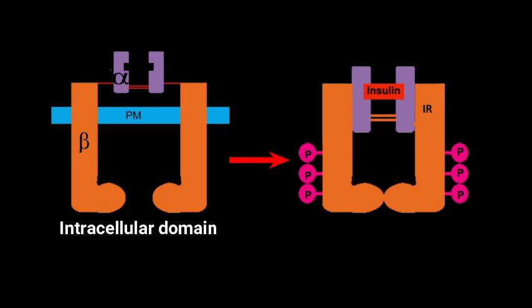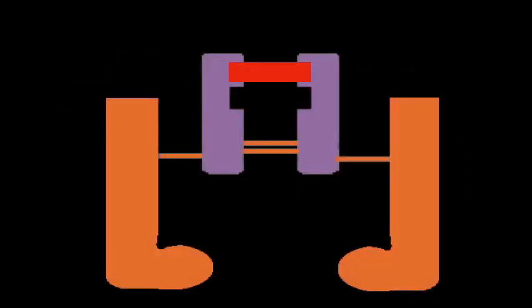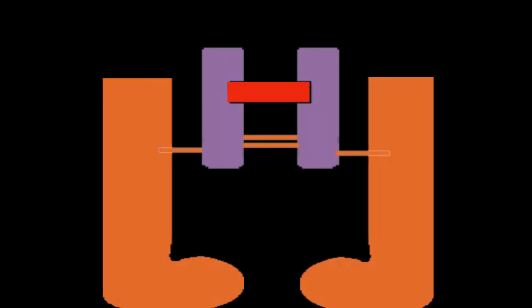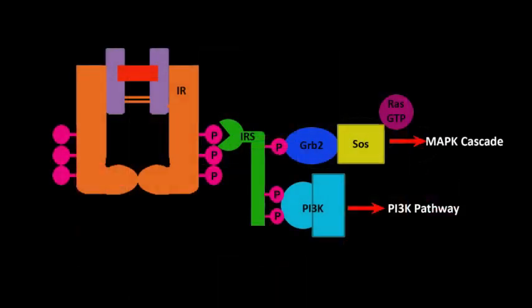Let's watch the animation of insulin receptor activation. Now, insulin receptor is in an activated state. The insulin receptor binds to the PTB domain of insulin receptor substrate, and insulin receptor substrate binds to proteins with SH2 domain. SH2 means SRC homology 2, and PTB means phosphotyrosine binding domain.